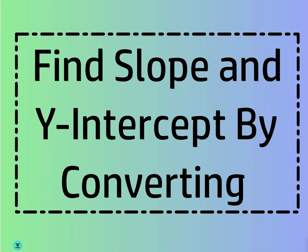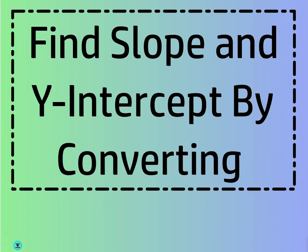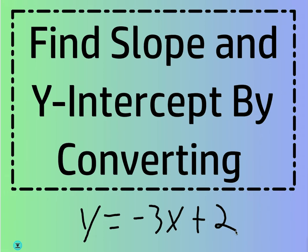When we found the slope earlier given the equation, it was already done for us. For example, let's say you have y equals negative 3x plus 2. What is the y-intercept? First of all, what's the slope? Negative 3, right? The number in front of the x. Real easy. You just look at what's in front of the x, and that's only because y is by itself.